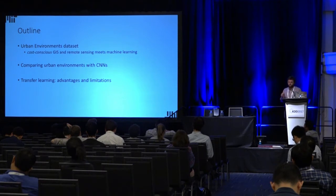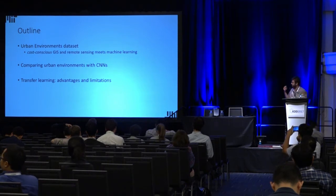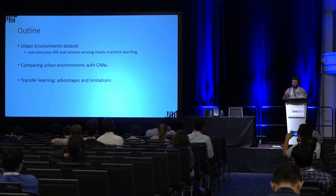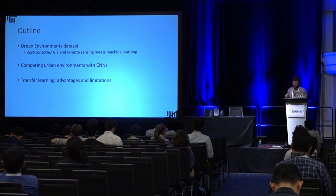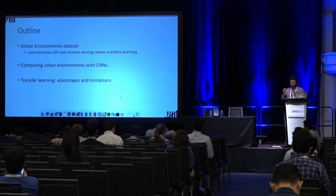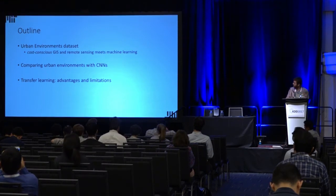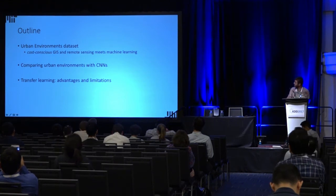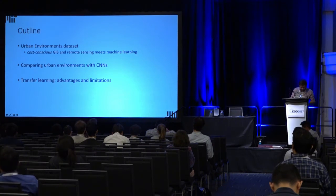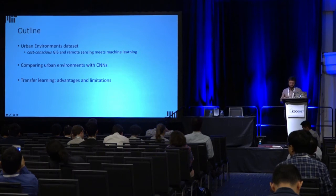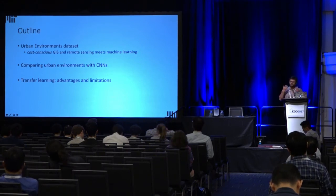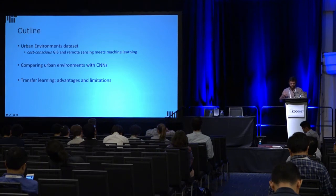I'll first discuss an effort to put together what I call the Urban Environments Dataset, essentially a cross-cutting GIS and remote sensing dataset for machine learning. I'll describe some experiments we did to compare various urban environments within this dataset, and then discuss experiments assessing the performance of training a model in one location and applying it to a different geographical location, and what the limitations of that procedure are.